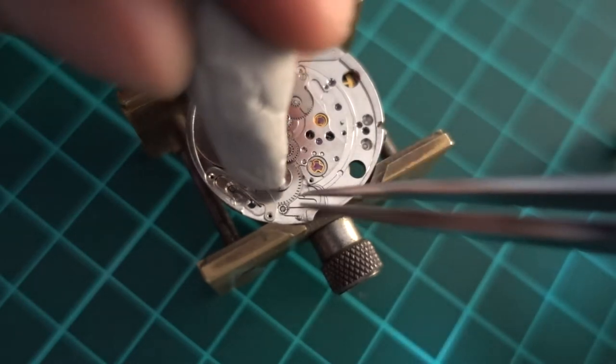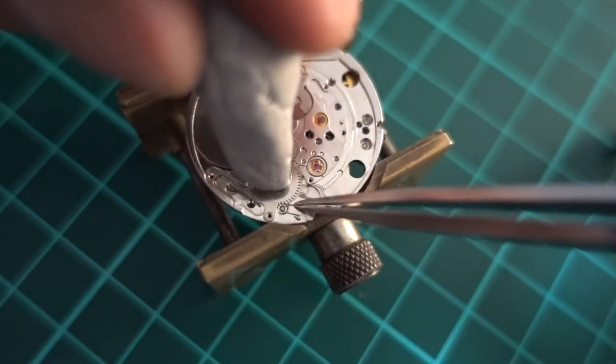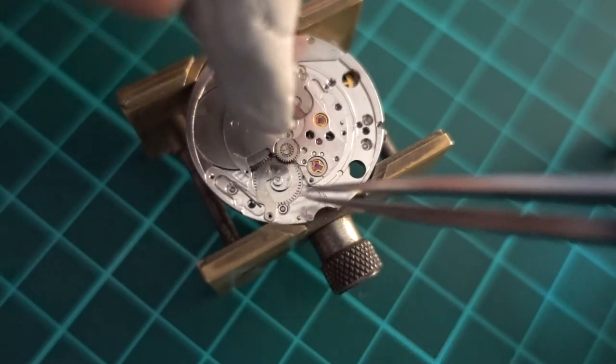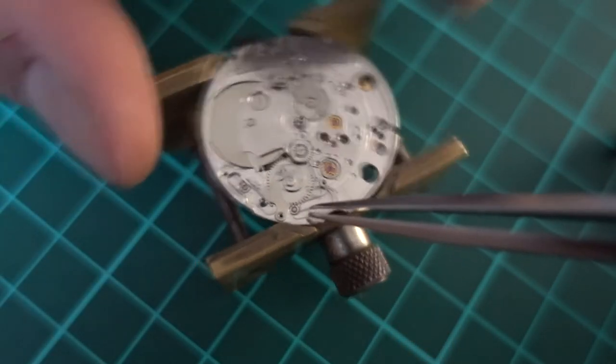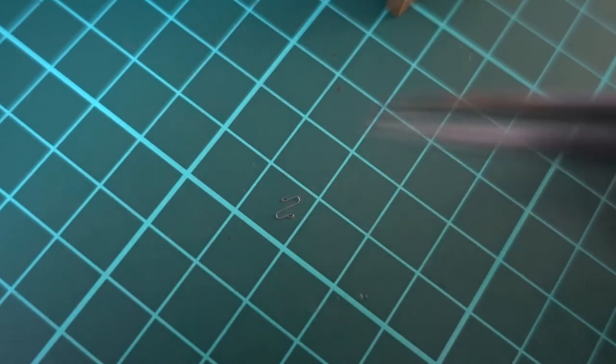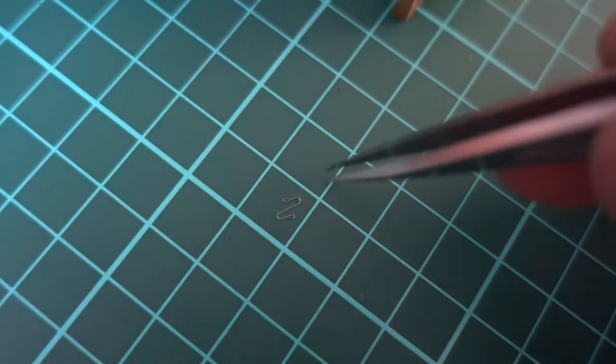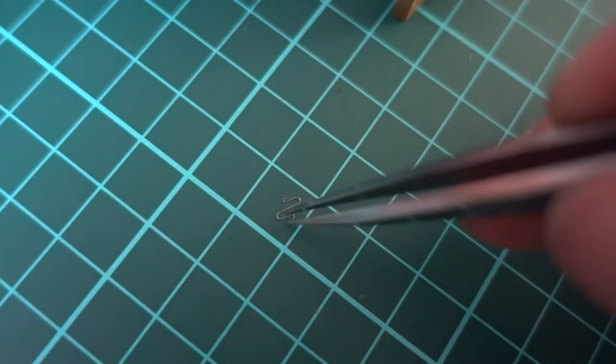If we have a look at the little spring there, that's a bit of an oddball spring that's used as part of the date changeover system. I'd be very careful not to lose that because I'm sure they're very hard to get. You'll see it there when I get it into focus. So that's one part of it.